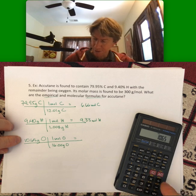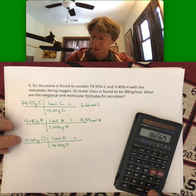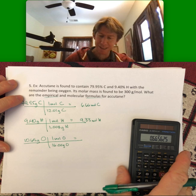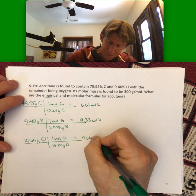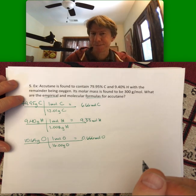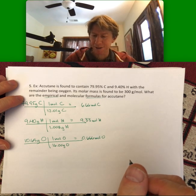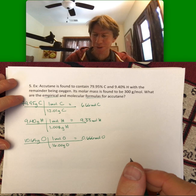10.65 divided by 16, 0.666. I'm seeing lots of numbers divisible by 3 here.